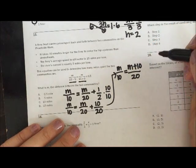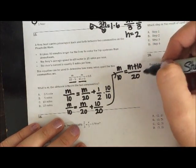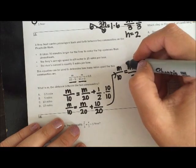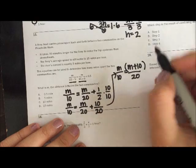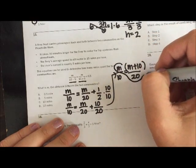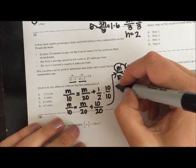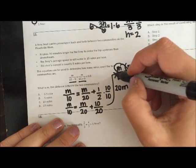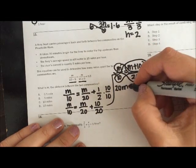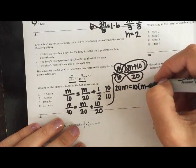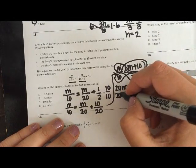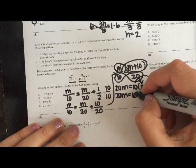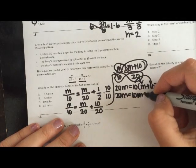So m divided by 10 equals m plus 10 divided by 20. Well, looky there. I have two fractions set equal to each other. This is when cross multiplication comes into play. But remember, this is a binomial. So put parentheses around it to remind you. Well, m times 20 is 20m. And then 10 times m plus 10. So let's go ahead and distribute. 10 times m is 10. And 10 times 10 is 100.